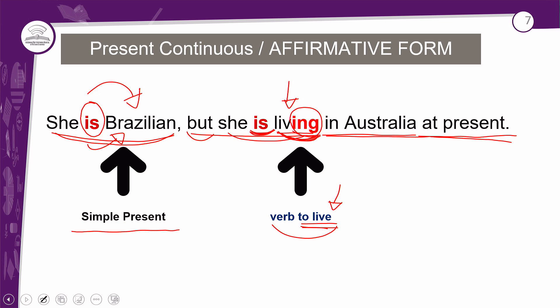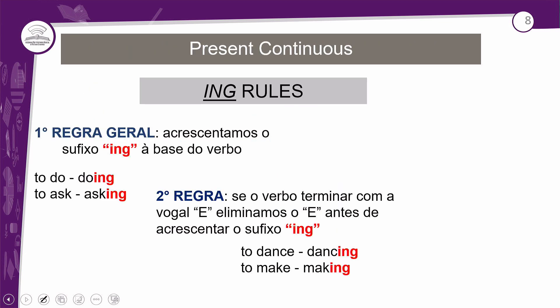Vamos entender as regras do -ing. A primeira regra, que é a regra geral: acrescentamos o sufixo -ing à base do verbo. Se o verbo não fizer parte das outras regras, ele entra aqui. Exemplos: to do → doing (fazendo); to ask → asking (perguntando).